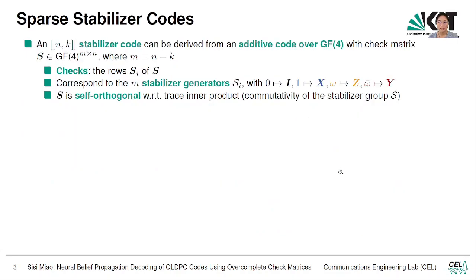Before I talk about the details, I would like to start defining some notations. We call a stabilizer code which uses n physical qubits to encode k logical qubits as an [n,k] stabilizer code. To derive a stabilizer code, we can work with the additive code over GF(4), and we define them with their check matrix S, which is an m by n matrix, where m equals n minus k is the number of checks.